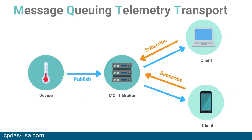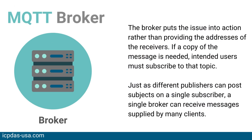Publish occurs when a device, the client, wishes to communicate data to a server, the broker. Subscribe is when the process is done backwards. Multiple clients can connect to a broker using the publisher-subscriber model and subscribe to topics that appeal to them. Messages are received by the MQTT broker, who must then filter them, determine who is interested in them, and publish the message to all clients who have subscribed.